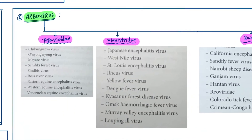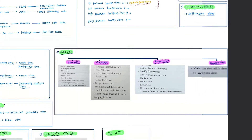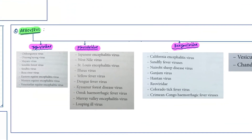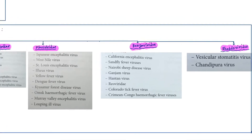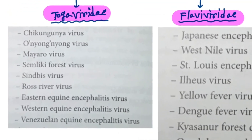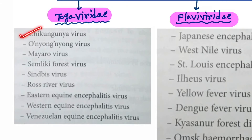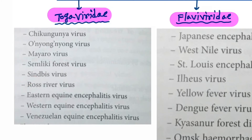Next is arbovirus, which has 4 families: Togaviridae, Flaviviridae, Bunyaviridae, and Rhabdoviridae. Starting with Togaviridae — the viruses are chikungunya virus, O'nyong-nyong virus, Mayaro virus, Semliki Forest virus, Sindbis virus, Ross River virus, eastern equine encephalitis virus, western equine encephalitis virus, and Venezuelan equine encephalitis virus.